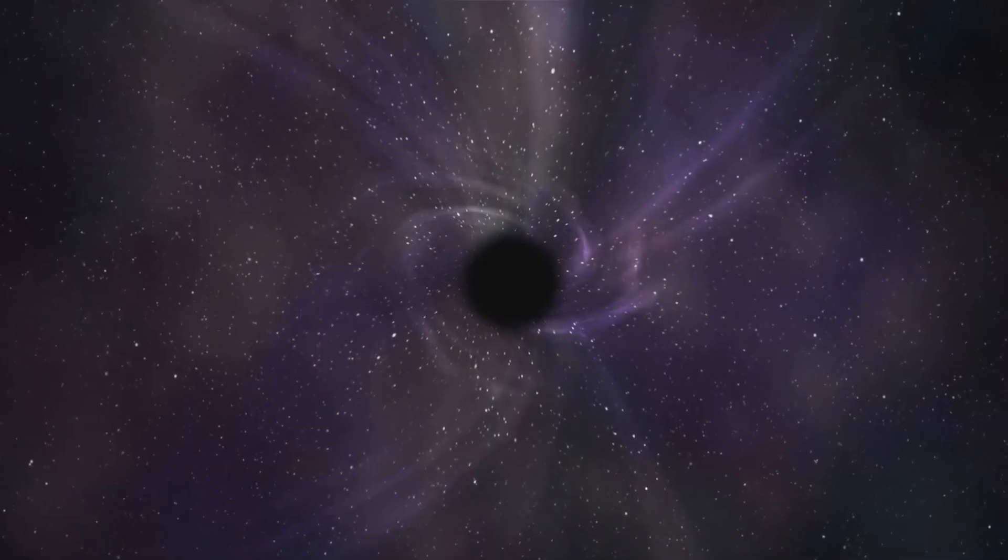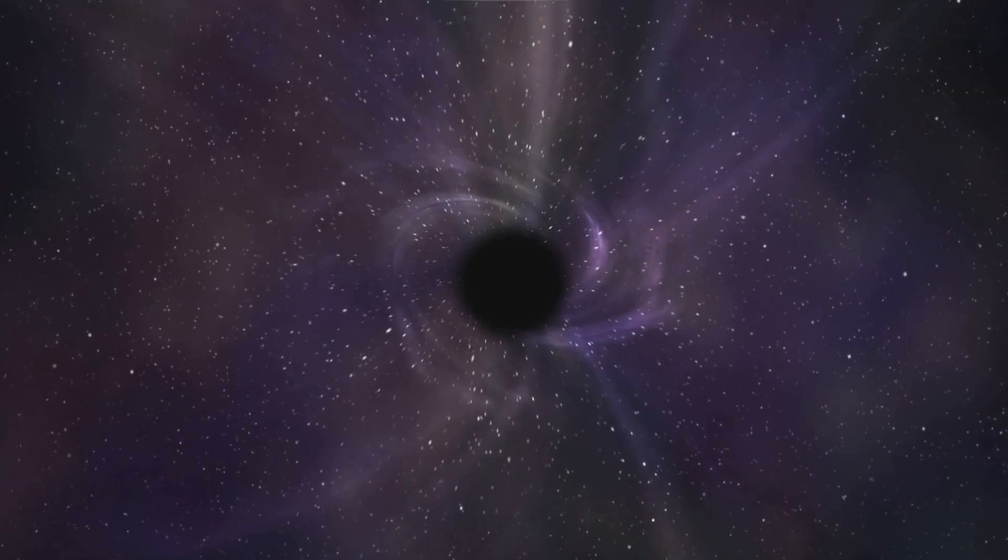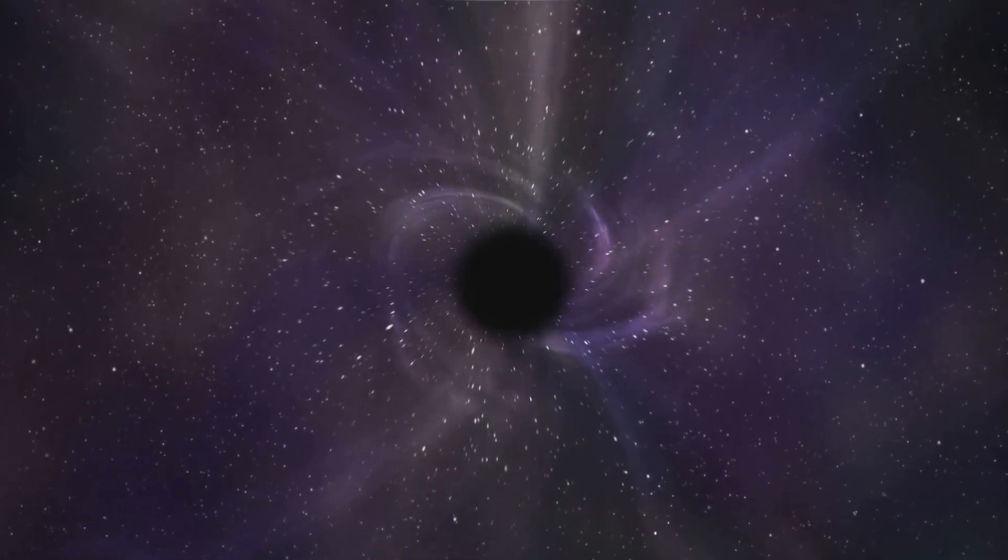It takes about three hours for light from TON 618 to reach us, so if it were in our solar system, then its event horizon, the point of no return, would extend beyond the orbit of Pluto. A quasar is a supermassive black hole actively gorging on gas and dust and emitting huge amounts of energy and light, and TON 618 is part of one.